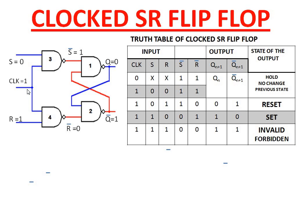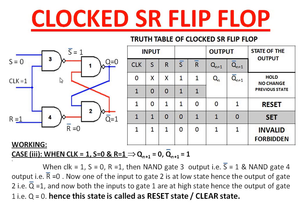Case 3: When clock is 1, S is 0, and R is 1. It is clear that the input to gate 3 is at low state, hence its output will be 1 — that is, S-bar equals 1. Gate 4 has both inputs high, hence its output will be zero — that is, R-bar equals zero. Gate 2 has a low input, hence it produces a high output, which is fed back to gate 1. Gate 1 then has both inputs high, so its output remains at low state. Since the normal output Q is zero, this state is called the reset state.